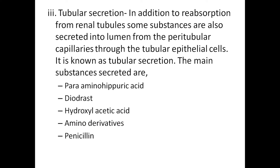Tubular secretion — in addition to reabsorption from renal tubules, some substances are also secreted into the lumen from the peritubular capillaries through the tubular epithelial cells. It is known as tubular secretion. The main substances secreted are para-aminohippuric acid, diodrast, hydroxyacetic acid, amino derivatives, and penicillin.